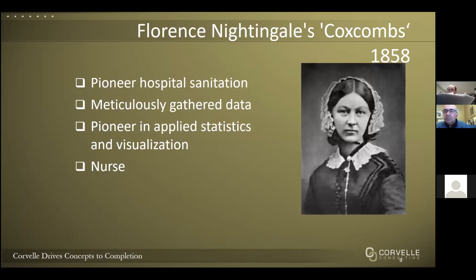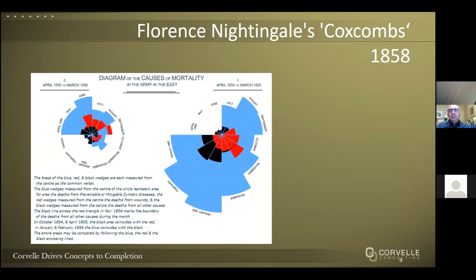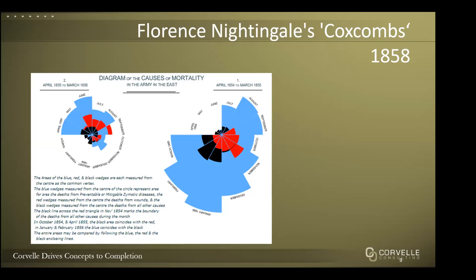Florence Nightingale was a pioneer in establishing the importance of sanitation in hospitals through her work as a nurse in the Crimean War. She meticulously gathered data to relate deaths in hospitals to cleanliness, and because of her novel methods of communicating this data, she was also a pioneer in applied statistics and visualization. In her original chart, the large blue area stands out immediately — representing deaths due to preventable causes like dysentery and bacterial infection. The red area shows deaths due to wounds, and the much smaller black area represents deaths from bullets, cannon, fire, swords, and spears.